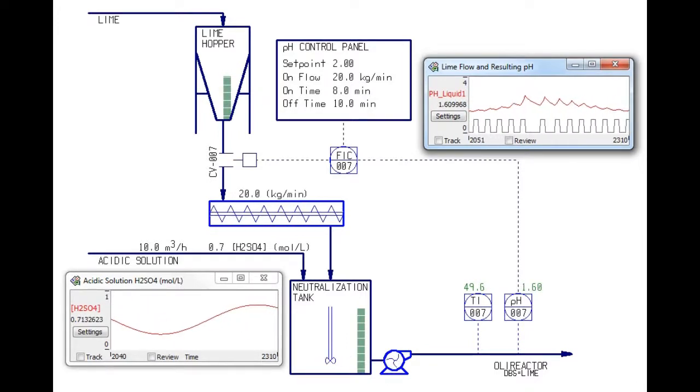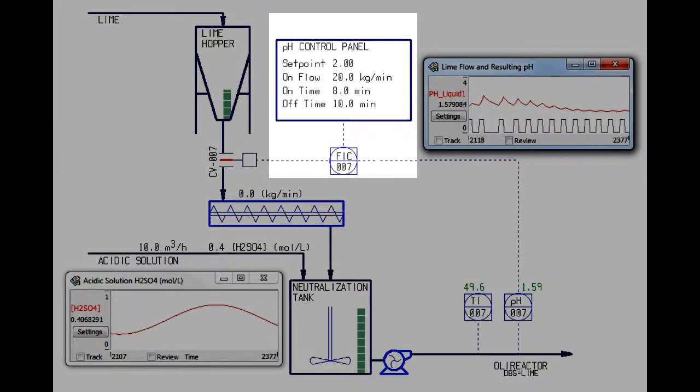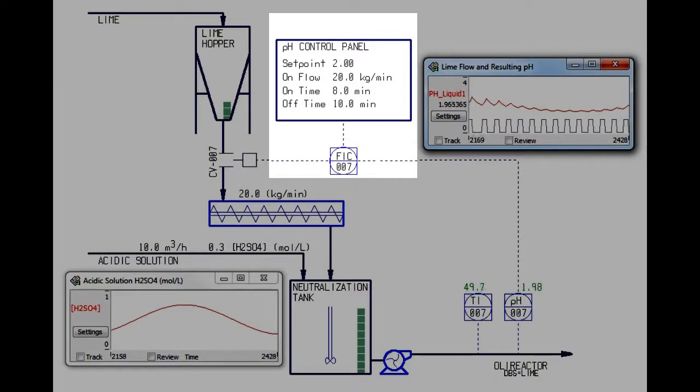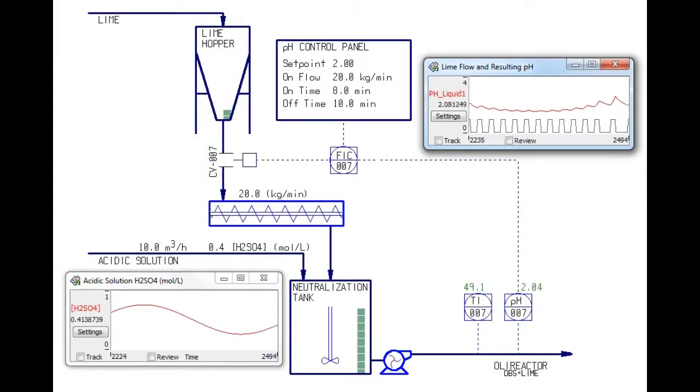To control the pH, I have set up a simple on-off pH controller that feeds lime in for 8 minutes and then lets the tank mix for 10 minutes. If the pH is below the setpoint, more lime is fed in on that schedule.